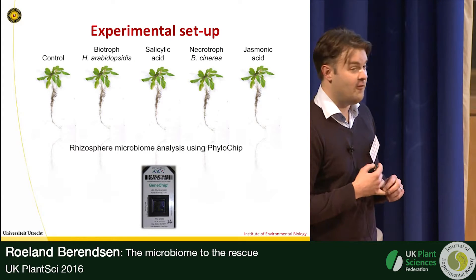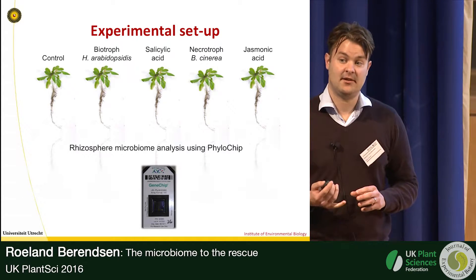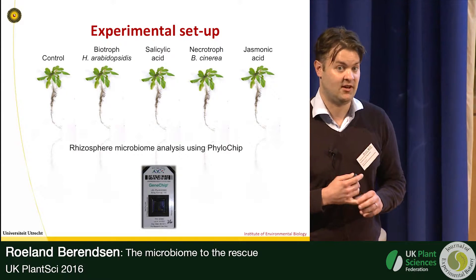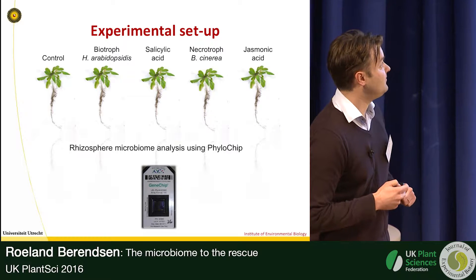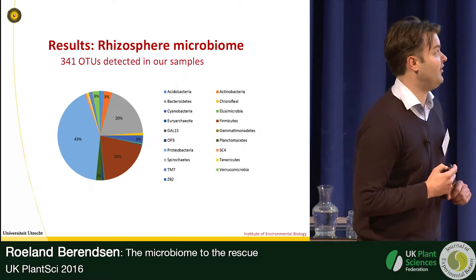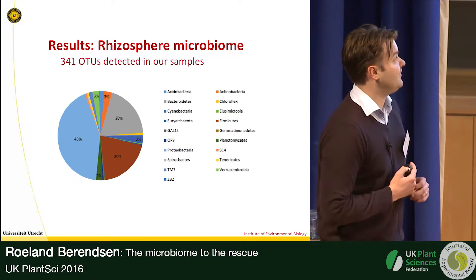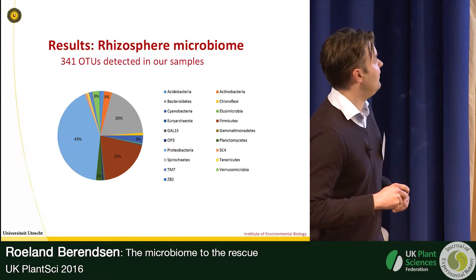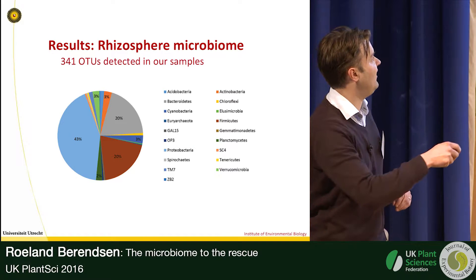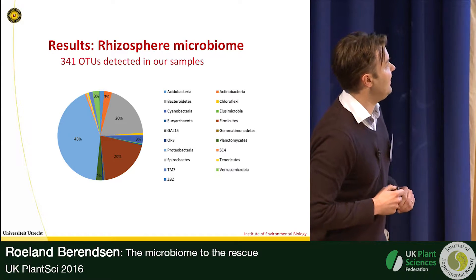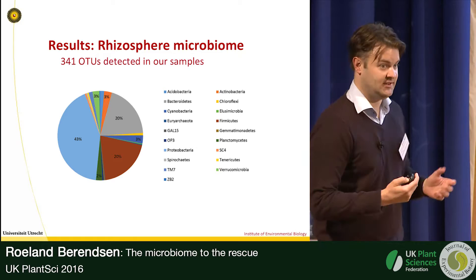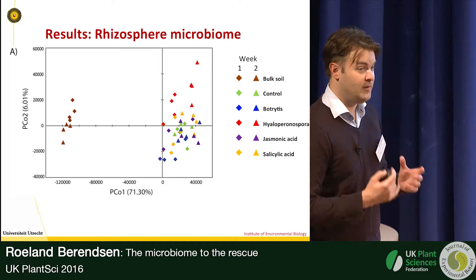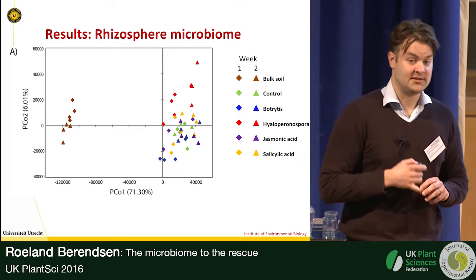We analyzed changes in the rhizosphere using phylochips at two separate time points: one week and two weeks after the start of treatment. These phylochips are microarrays containing probes based on the 16S rRNA gene, allowing us to determine the presence and abundance of over 60,000 bacterial OTUs and archaea. We found 341 OTUs across all our samples.